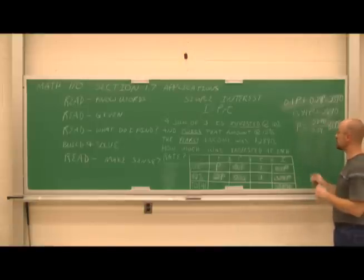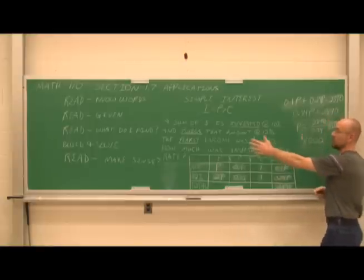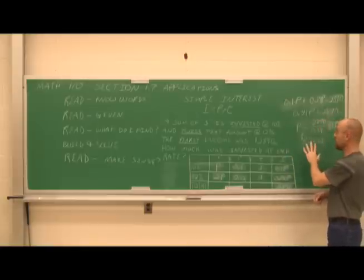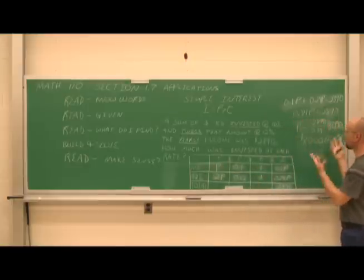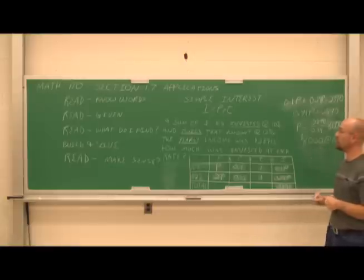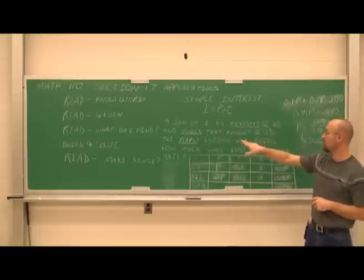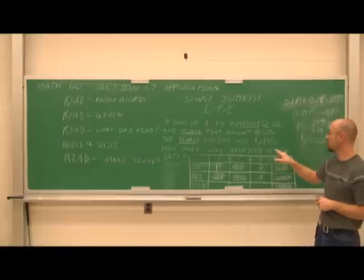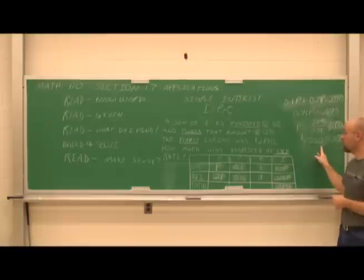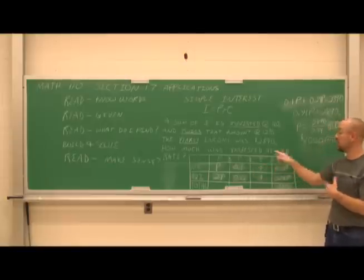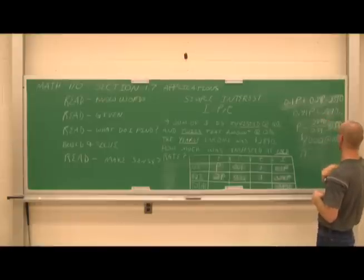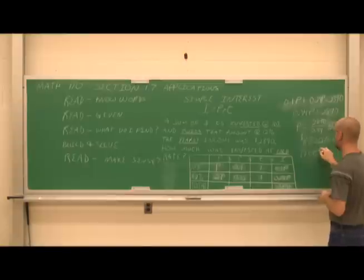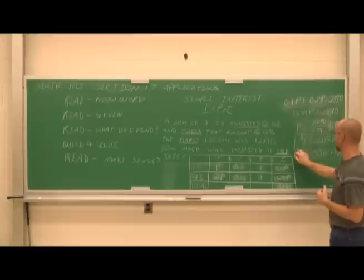P = 8,000 — but 8,000 what? Units are very important in story problems. We're dealing with a sum of money, so this is $8,000 invested at 10%. But did we answer the full question? The question asks for the amount invested at each rate. The second amount is twice P. So 2 × 8,500 — working this out — gives $17,000 invested at 12%.